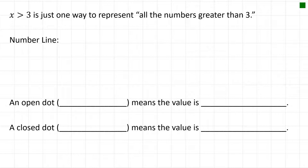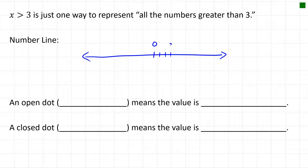X greater than 3 is just one way to represent all numbers greater than 3. Another way is with a number line. If we draw a number line with 0, 1, 2, 3 marked, we find the number 3 and then fill in all the numbers to the right — all numbers greater than 3 — and show an arrow extending to the right. The circle drawn at 3 is an open circle.